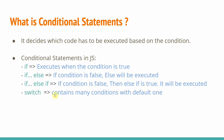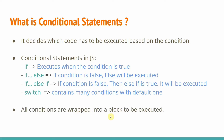Switch case: switch contains many conditions with one default. If a condition is true it will execute. If a condition is false, it checks the next case. If that is true, it executes. Switch case handles multiple conditions with one default. If a condition is met, otherwise default executes.